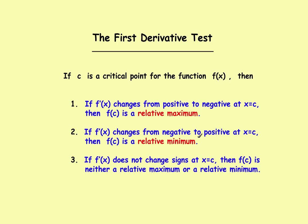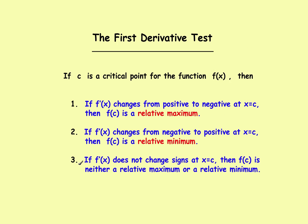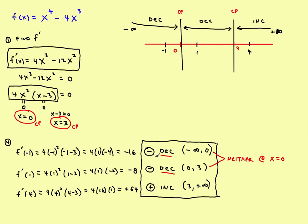Let's apply this to our critical points. At x equals 0, the function was decreasing before and continues decreasing after — the derivative was negative and stayed negative. Therefore, the first derivative test tells us we have neither a maximum nor a minimum at x equals zero.